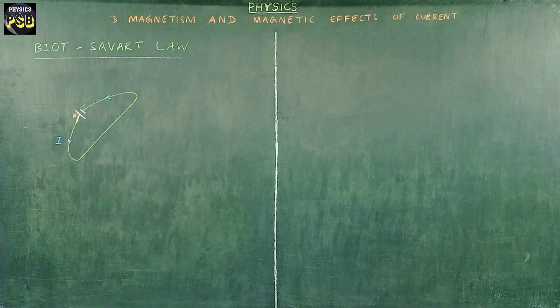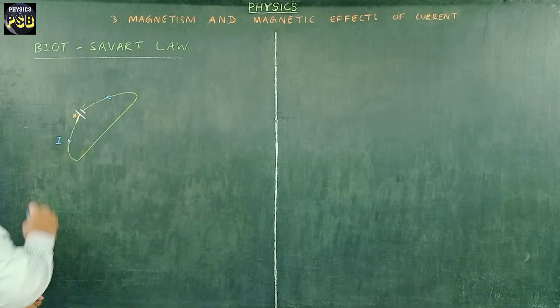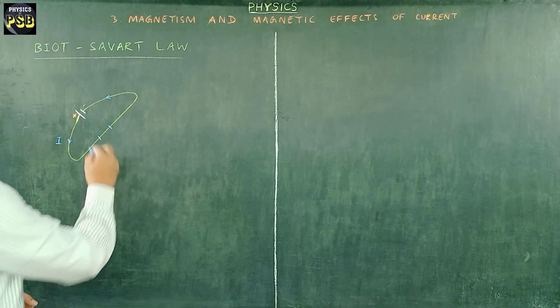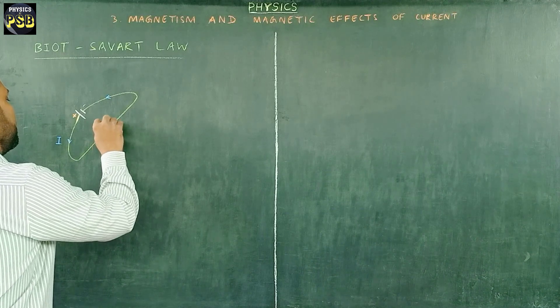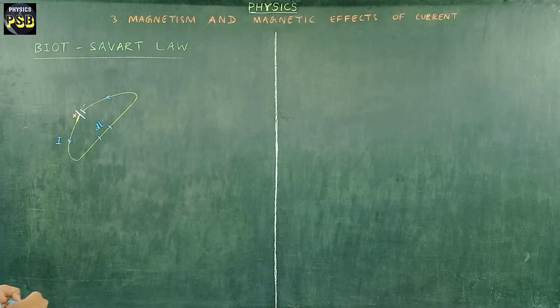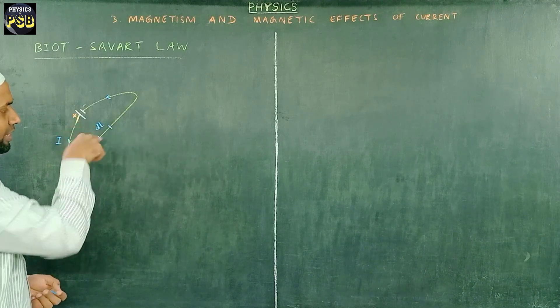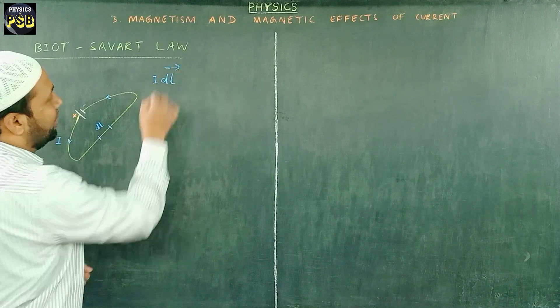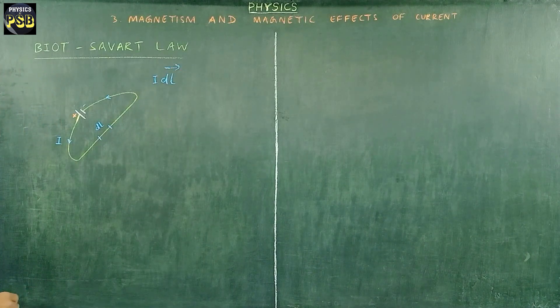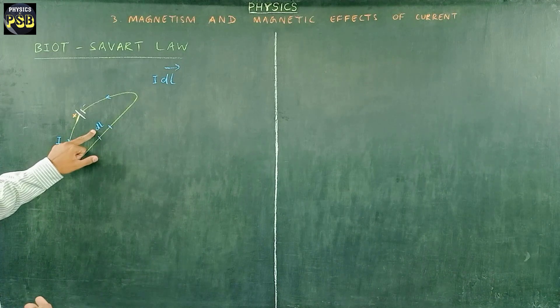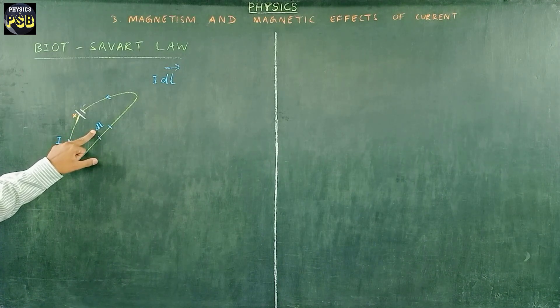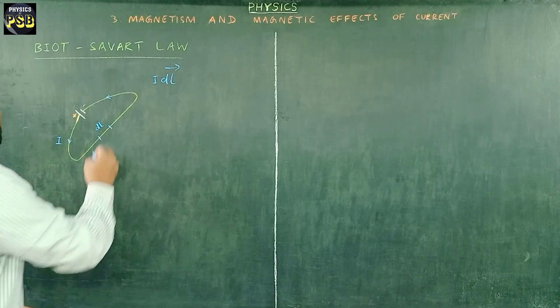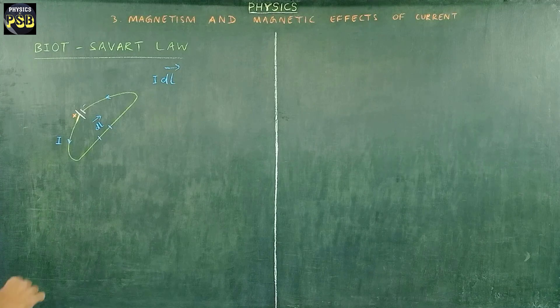For my convenience I take a small portion in this current carrying conductor. I call this as length element dl. As current I flows through this it can be referred as current element idl. This current element idl, the element dl acts along the length of the conductor so it can be referred as dl vector.